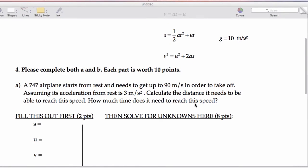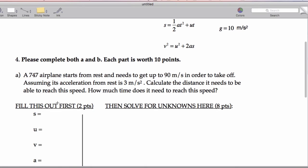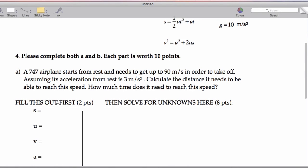Alright, so now we're going to go ahead and complete problem 4. Basically here we're going to be using the SUVAT formulas. Let's go ahead and be careful, make sure we're doing this properly. We have a 747 starting from rest, needs to get up to about 90 meters per second in order to take off.